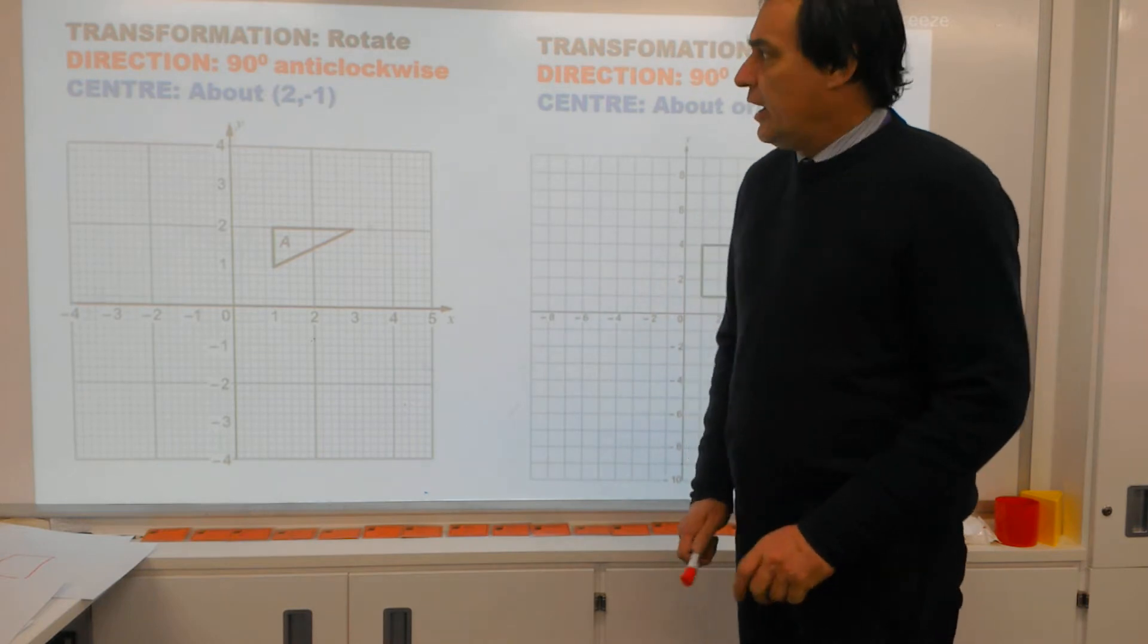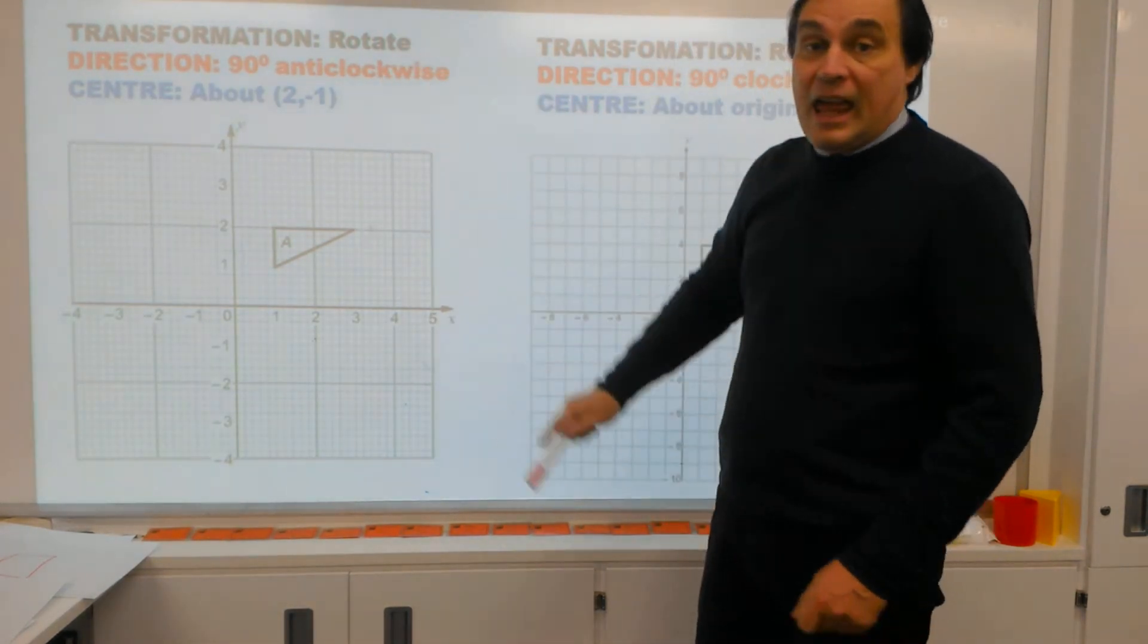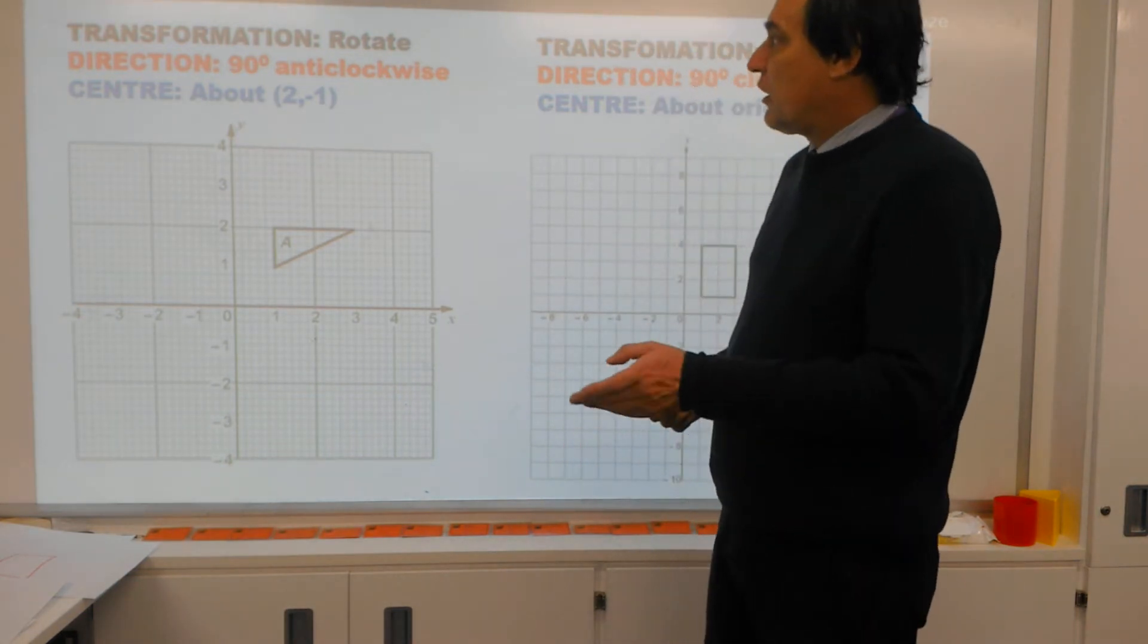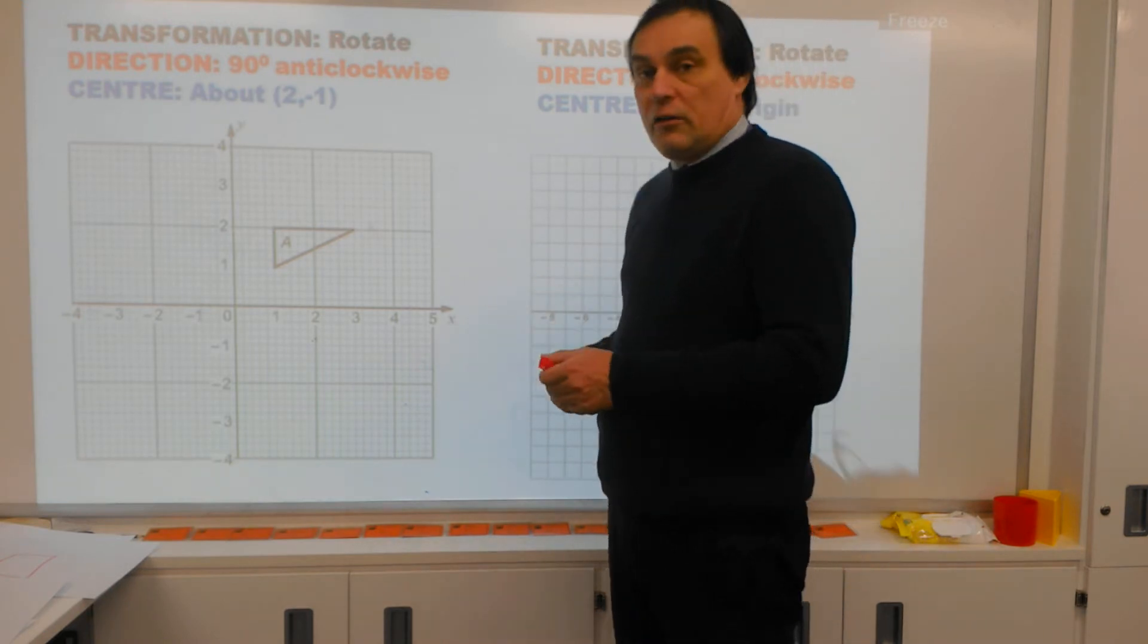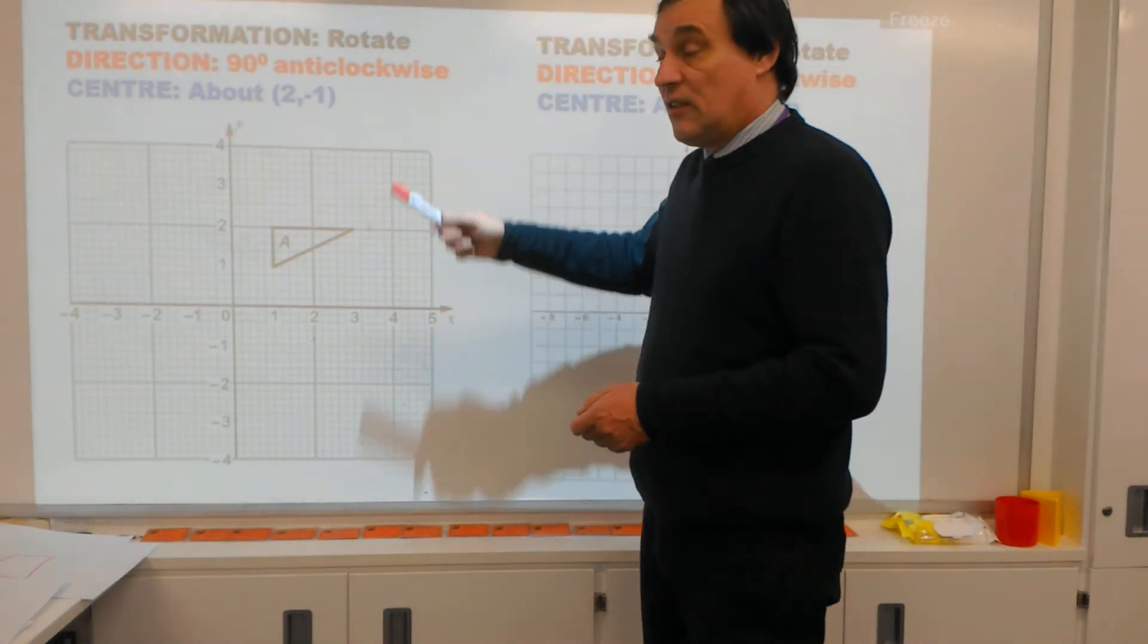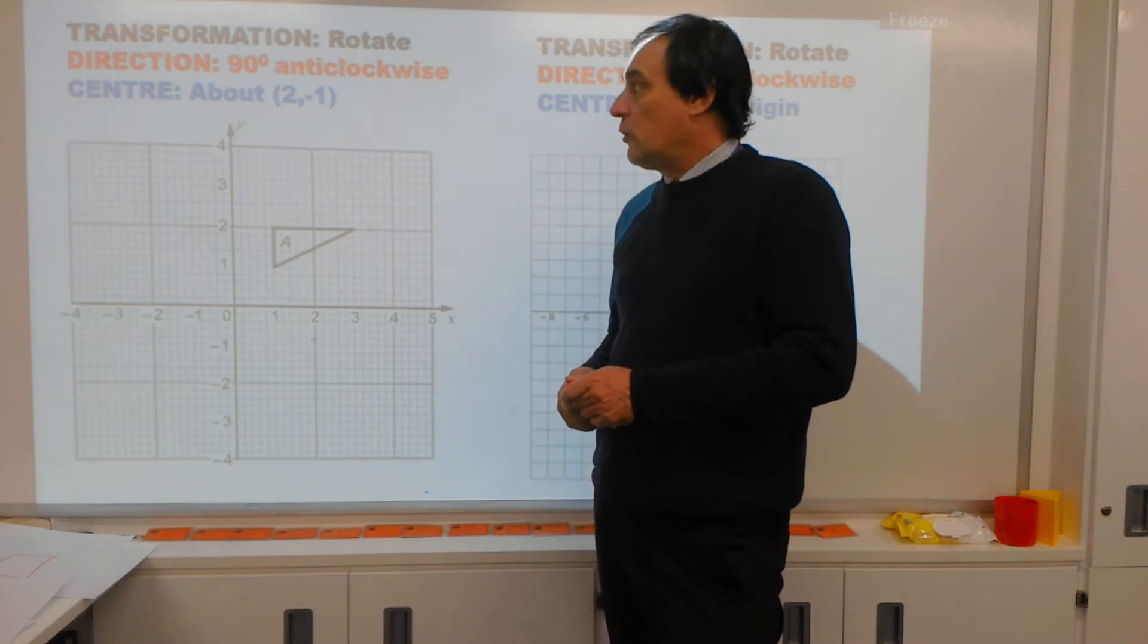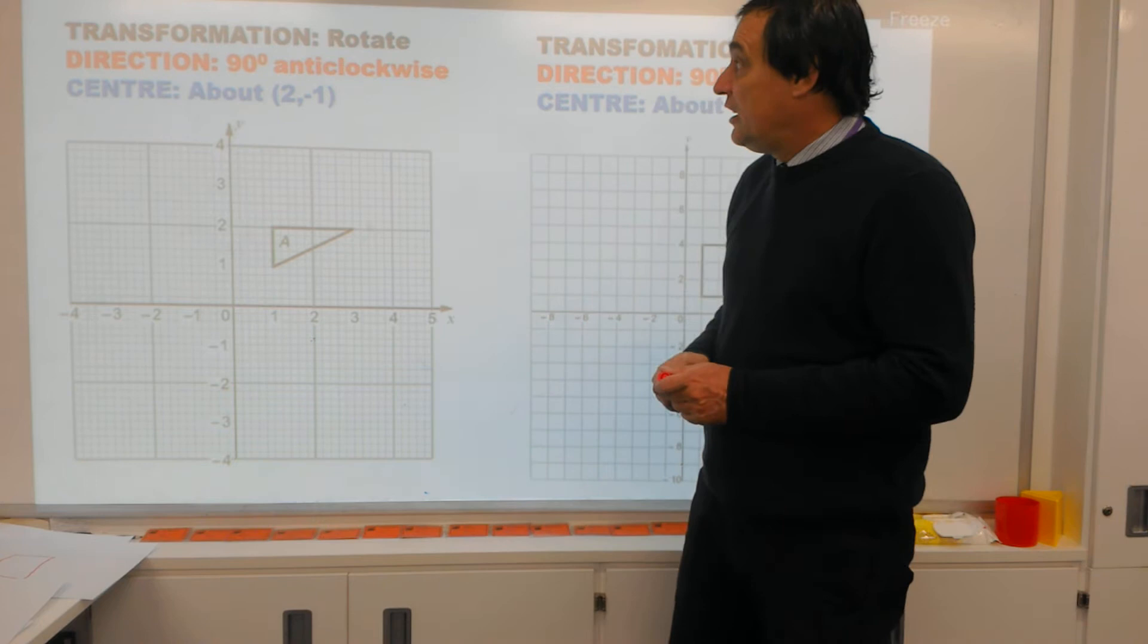Whenever we've got a question about rotation, there are going to be three types of elements or information inside that question. The first piece of information you're going to get is they're actually going to tell you to rotate the shape. That will stop you from confusing it with reflecting, enlarging, or other transformations. The second piece of information they'll give you will be the direction they're asking you to rotate the shape. In this case here, it's going to be 90 degrees anticlockwise.